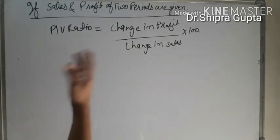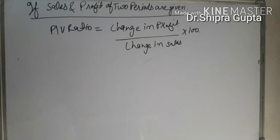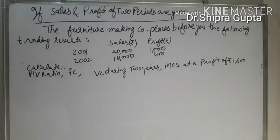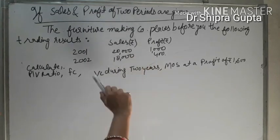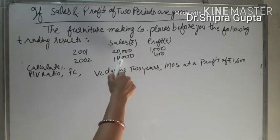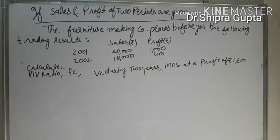To understand PV ratio properly, we will take an example. The question is: A furniture making company places before you the following trading results. In 2001, sales rupees 20,000 and profit rupees 1,000. In 2002, sales rupees 18,000 and profit rupees 400. Calculate PV ratio, fixed cost, variable cost for both years, and margin of safety at profit of rupees 1,600.